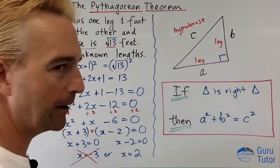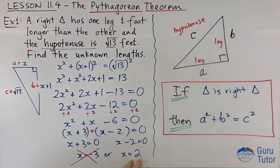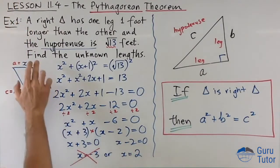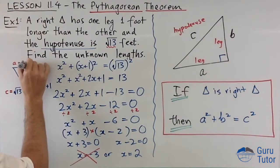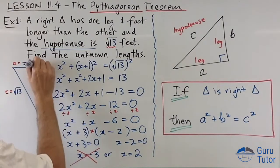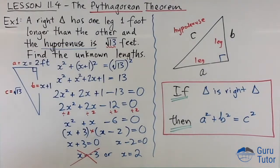What about x is two? Yes, that's going to give a positive length. Yes, that's going to give a positive length. We've found it. Okay, but be careful, the answer is not x equals two. What's the question asking for? Find the unknown lengths. So it wants to know what is this length. One of the lengths is x, and x is two, so two feet. Don't forget your units.